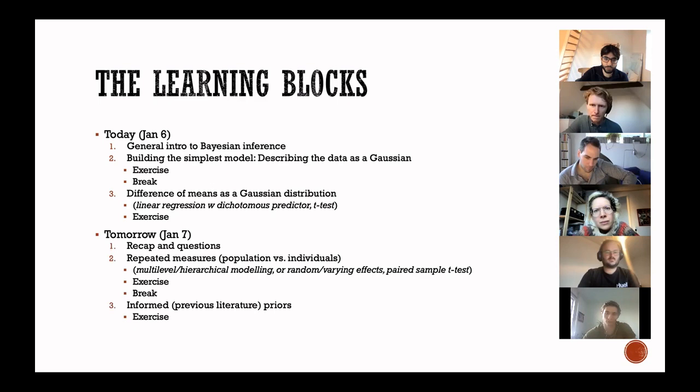Tomorrow we'll start by recapping questions. We'll move on to repeated measures, discussing what it means to have individual and population modeling in the same model. This corresponds to multi-level hierarchical modeling, to random or varying effects, or to paired sample t-tests in the specific case that we're going to run. The final part of the workshop will be after we've learned how to build these models.